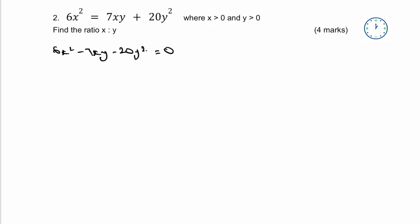So the first thing I'm going to do is multiply 6 times -20 and I'm going to get -120. Now, the two factors of that that multiply together and then add together to make -7 is going to be -15 and +8.